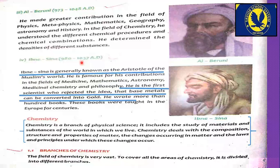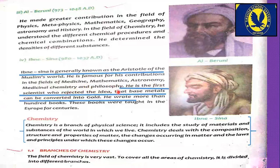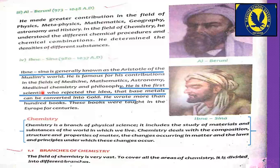Ibn Sina, 980 to 1037 AD, is generally known as the Aristotle of the Muslim world — underline this line. The Urdu word for Aristotle is Arastu. He is famous for his contributions in the fields of medicine, mathematics, astronomy, medicinal chemistry, and philosophy. He studied the effects of different chemicals on human health.